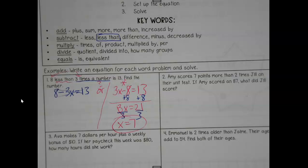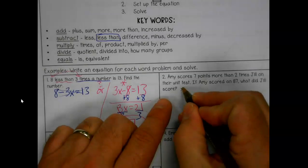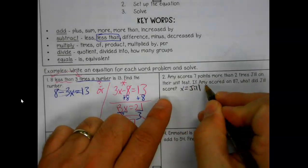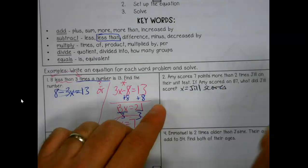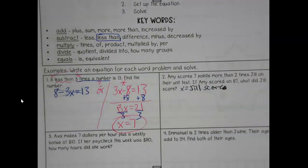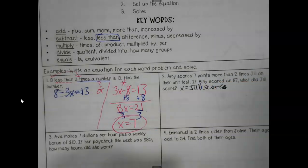How much work you feel you need to show to get to the answer is your call, as long as we get to the right answer. Get our X term by itself, do our opposite. In the magic number, we have it. So again, pretty straightforward. Sometimes they're going to get a little crazier than that, but not anything too bad. Amy scores seven points more than two times Jill on their unit test.